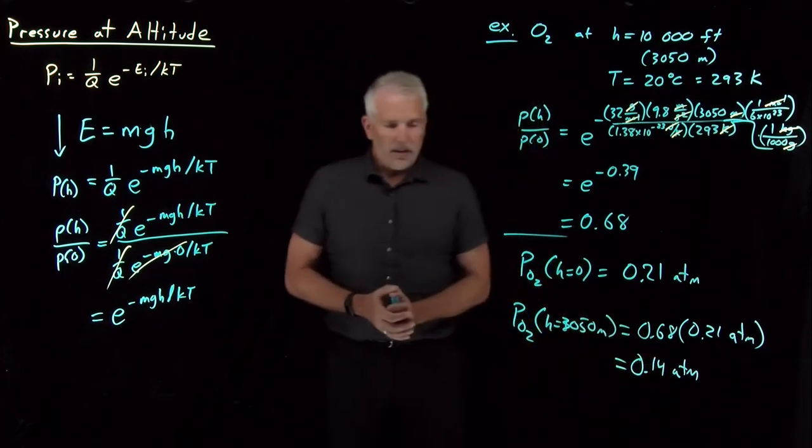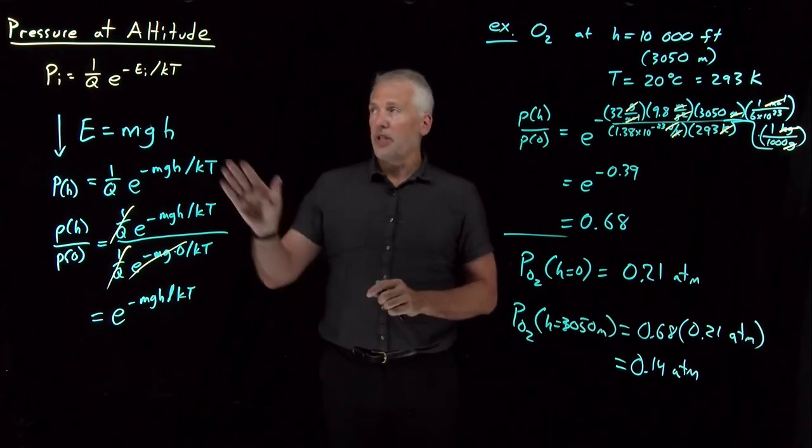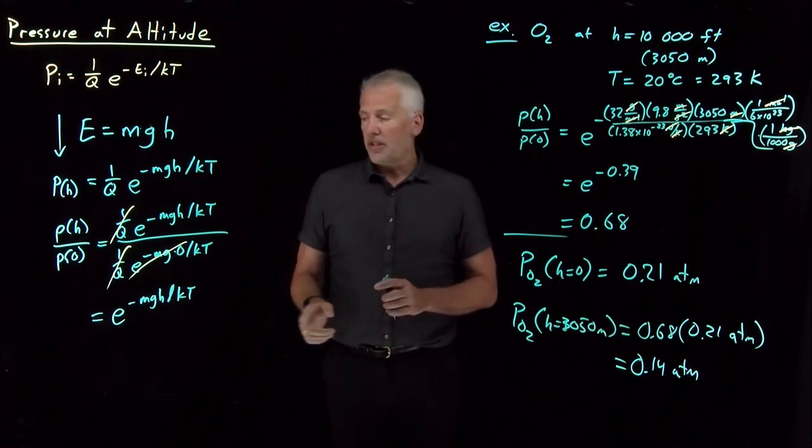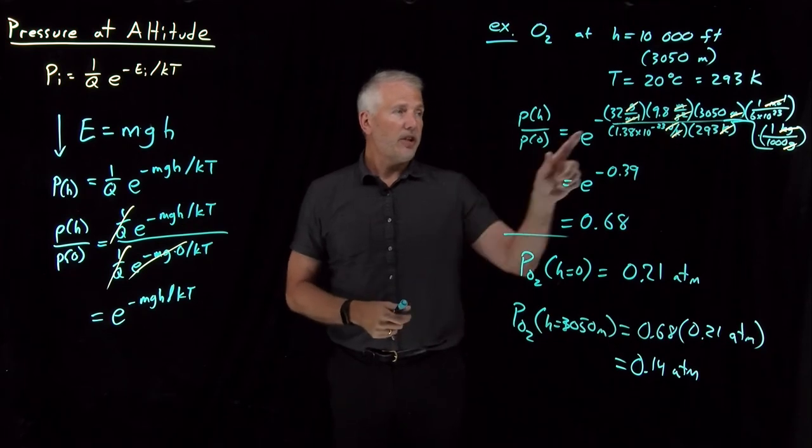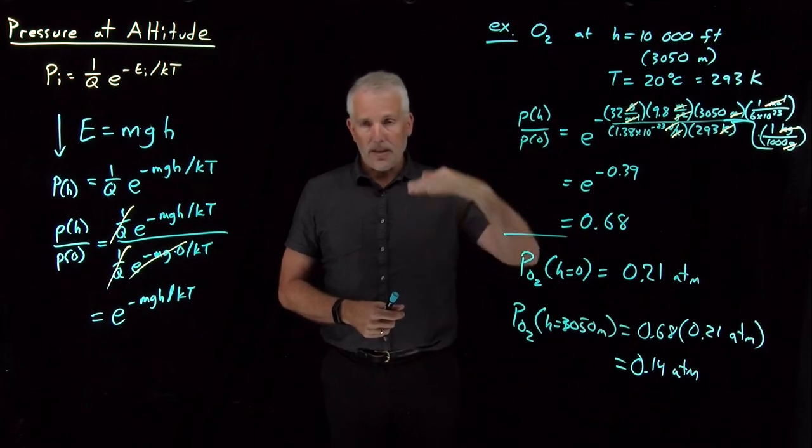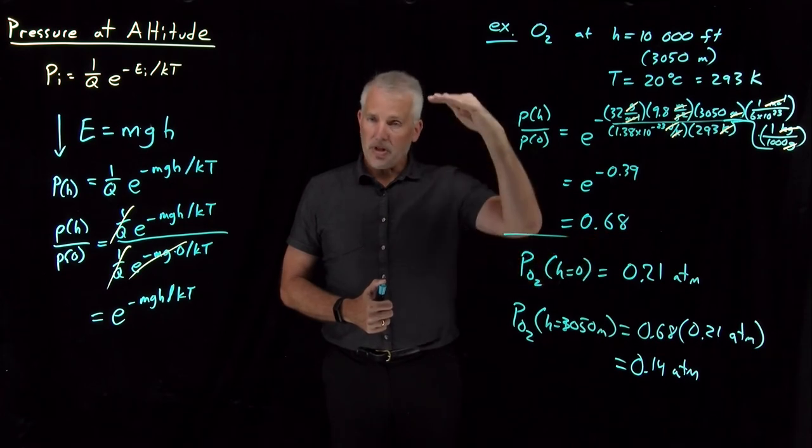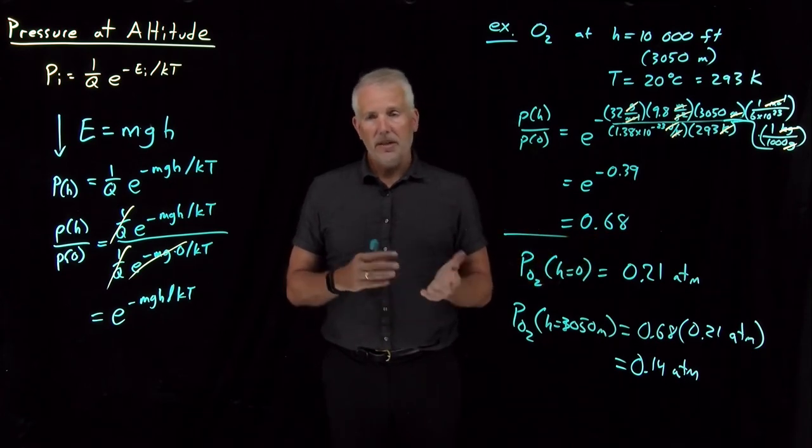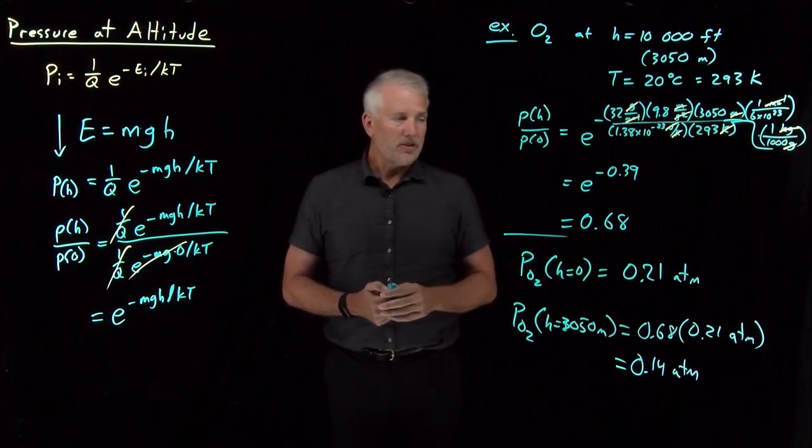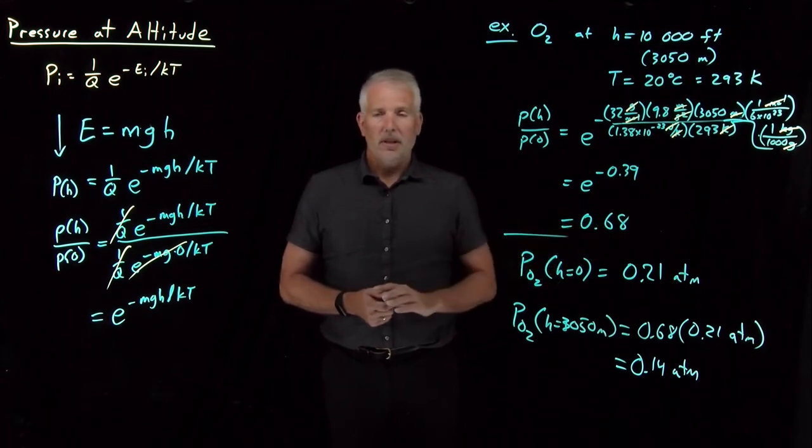So the two things to point out here. Number one, if we're specifically interested in pressure of gases at altitude or air pressure varying with altitude, notice that this calculation depended on mass. If I had done this calculation for a different molecule other than O2, it would have dropped by some different amount. So air thins out as we go up in altitude, but the amount of oxygen in the air thins out at one rate. The amount of nitrogen in the air thins out at a slightly different rate. The amount of CO2 or water vapor or argon or other gases in the air will all thin out at various different rates. So if we're really interested in the composition of air at altitude, we have to do more than just this one calculation.